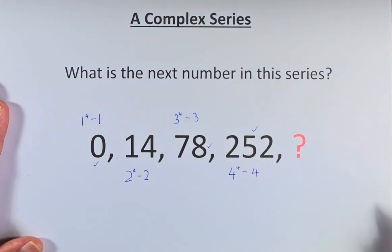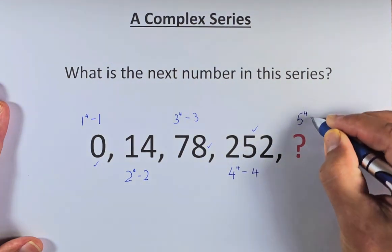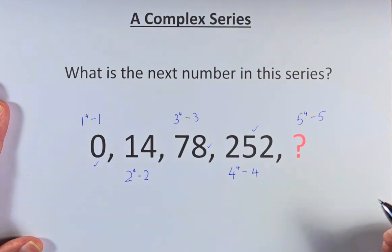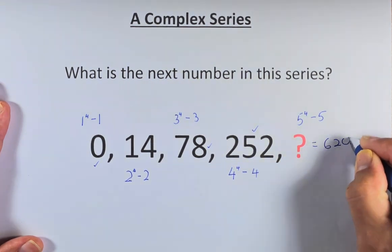And last but not least, we have the question mark. It should be 5 to the power of 4 minus 5. 5 to the power of 4, 5 times 5 times 5 times 5, it's going to be 625 minus 5. The question mark is going to be 620.